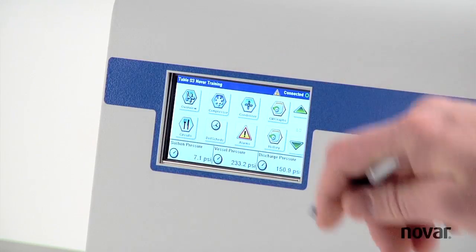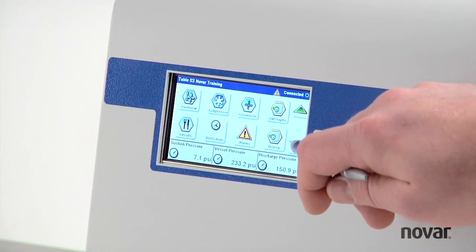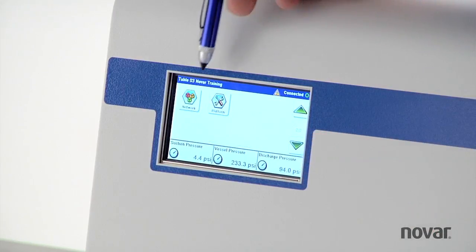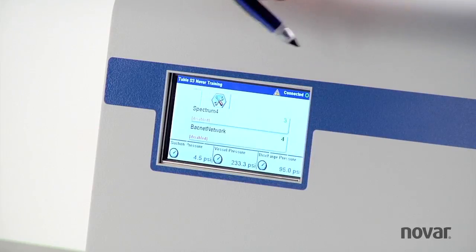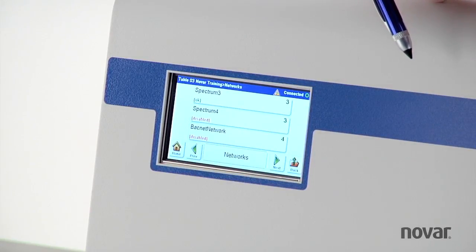Depending on how many icons we have, you may have to use the right arrows here to page up and page down. In this case I'm going to page down. There you can see my network icon. I'm going to push it and this will show you all the networks this XEM 20R has on it.